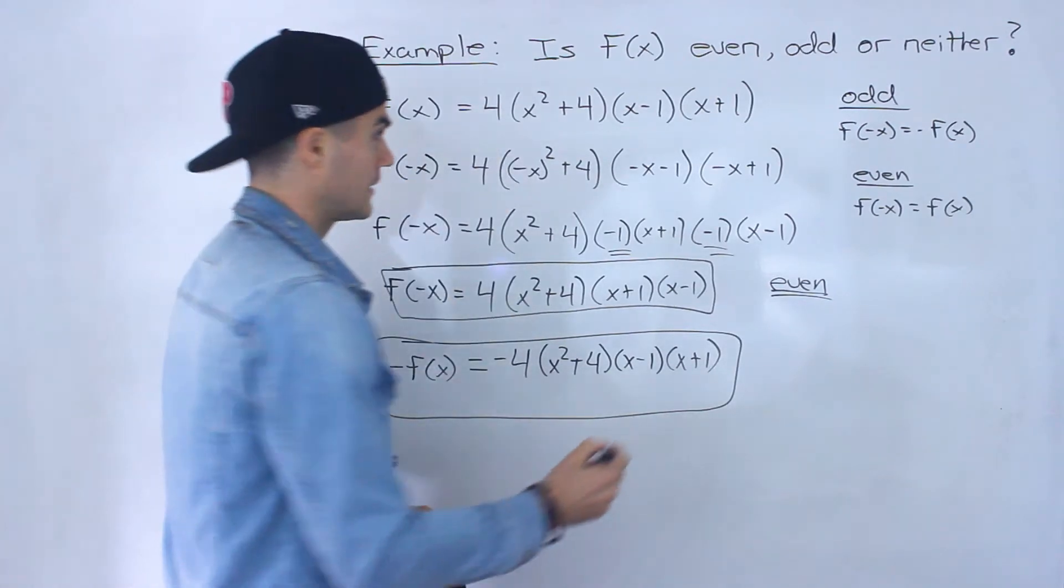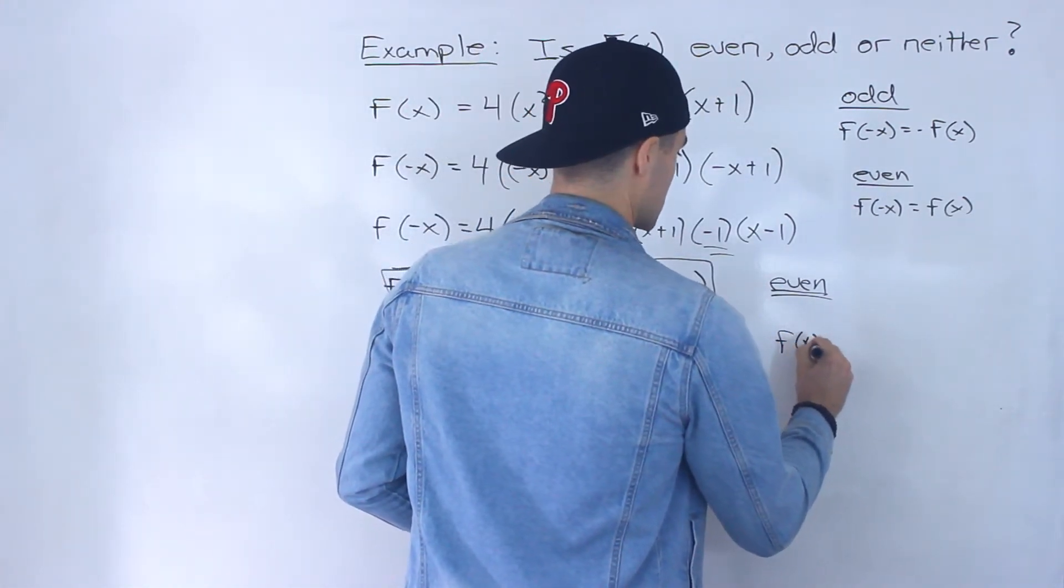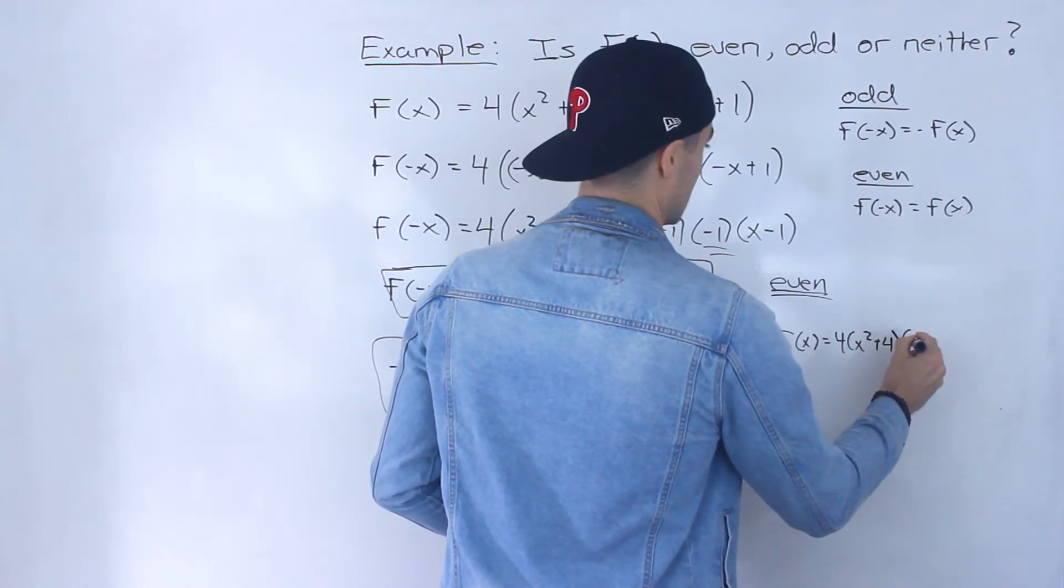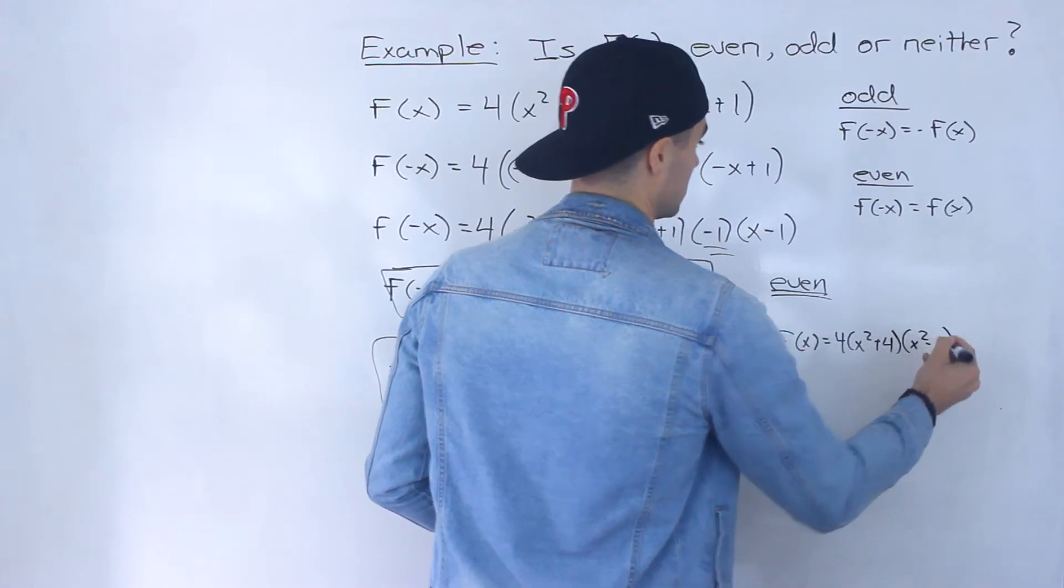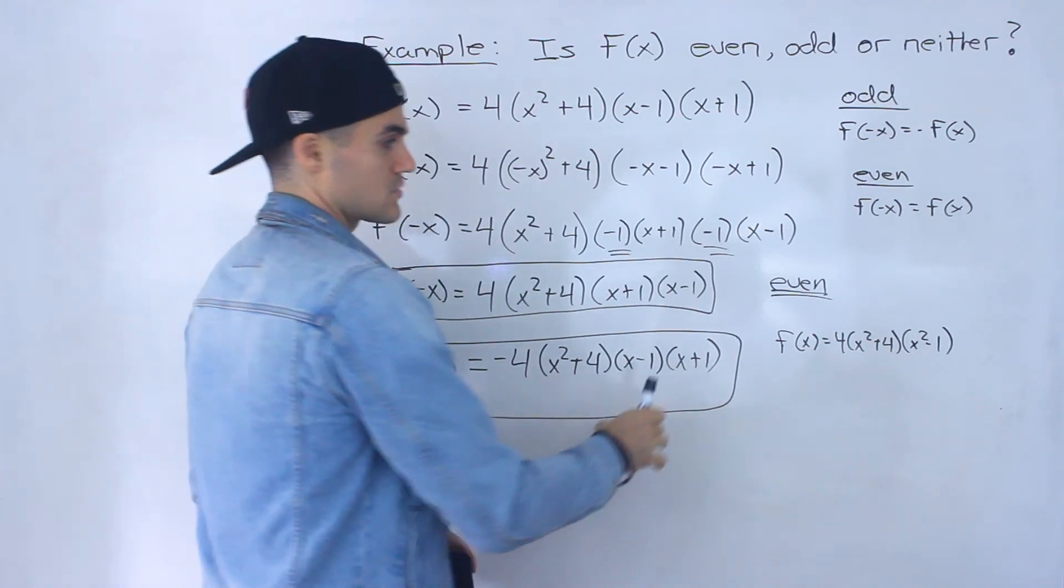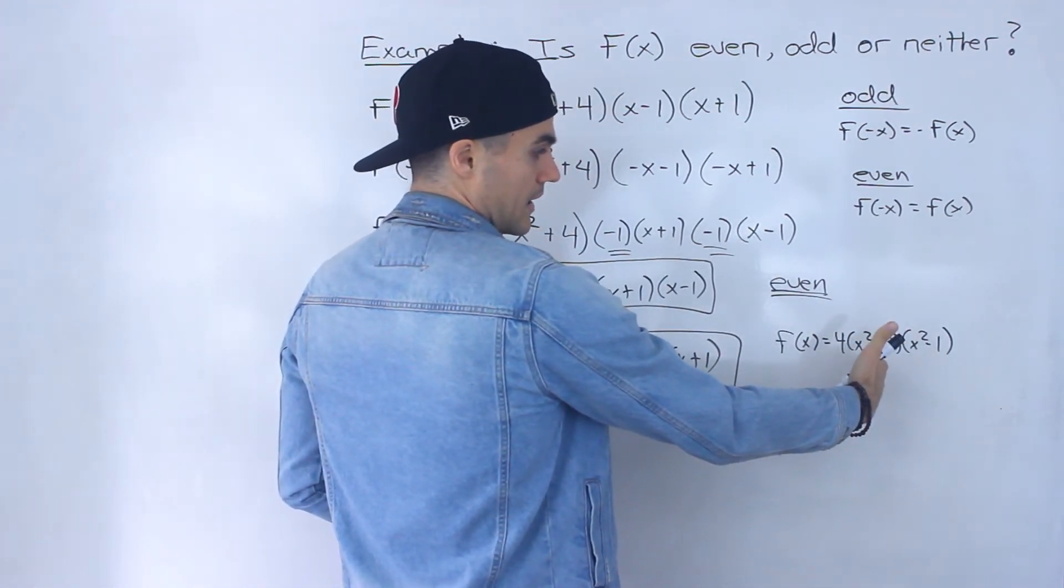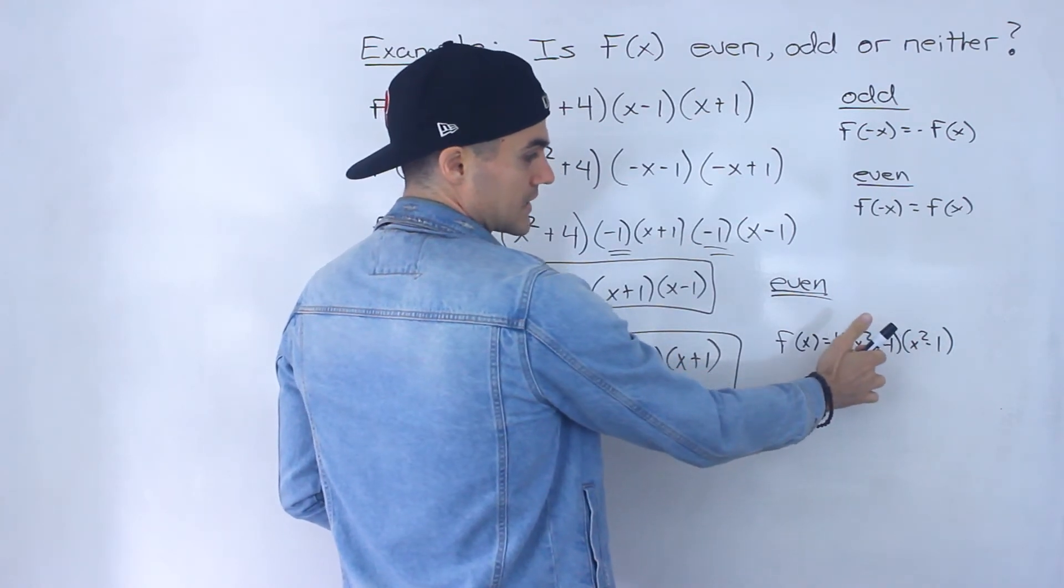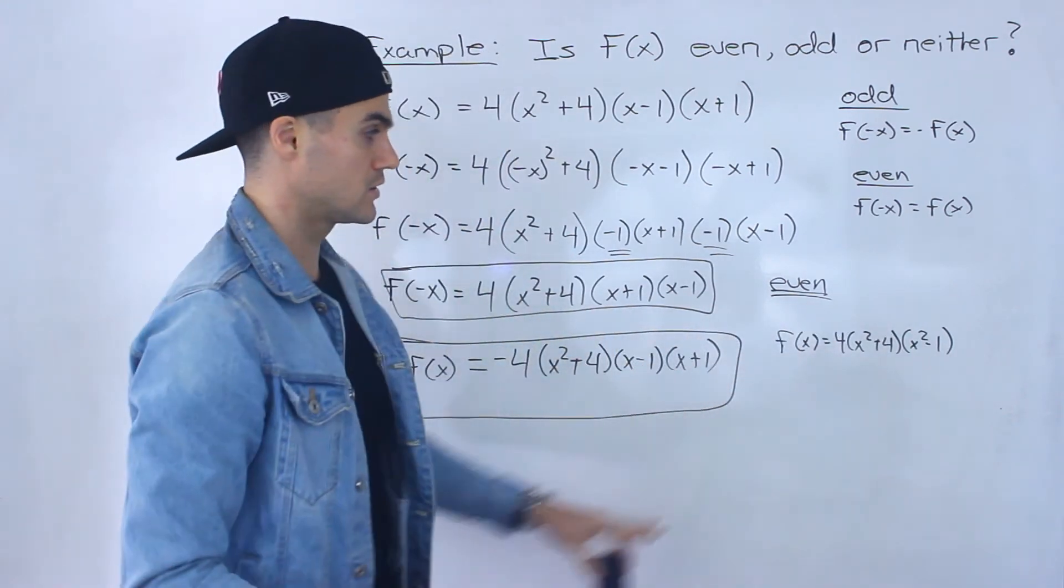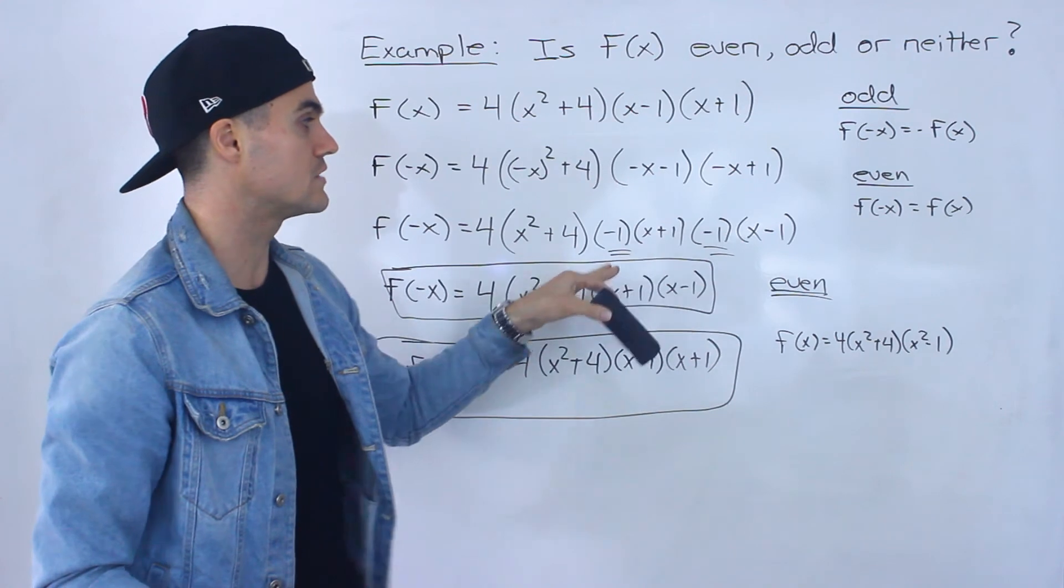Now another format this could have been in is, just kind of want to give you a heads up of how else this could have been written, is this could have been x squared minus 1 as well. This is a difference of squares that was factored. So if you perform the same process on this, it would actually be easier on this because you'd have negative x squared, and negative x squared, those would just turn into positive x squared and you end up with just the same function. You wouldn't even have to factor out these negative ones.